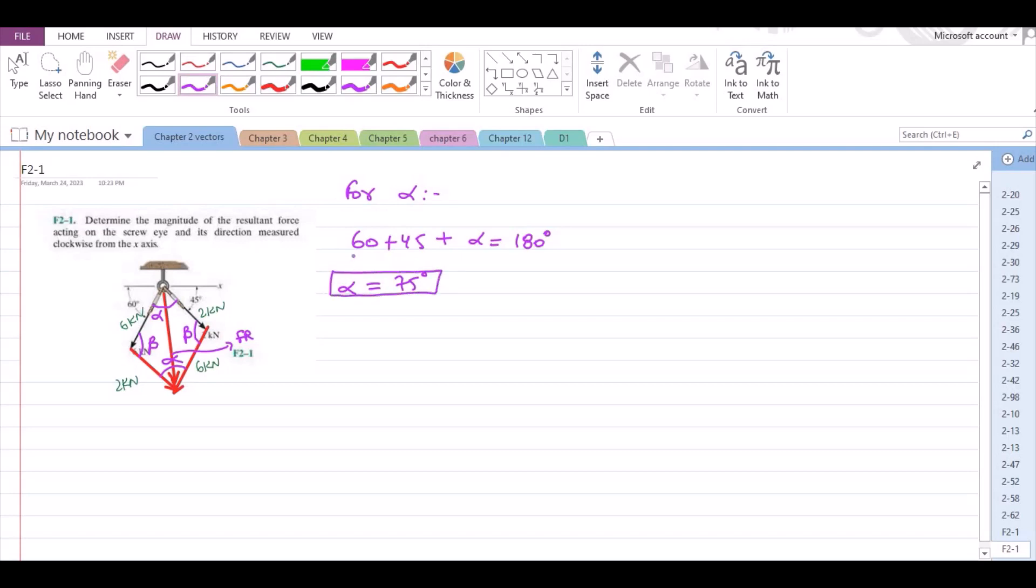Now, we know that for a quadrilateral, the sum of the interior angles is equal to 360 degrees. From here beta is equal to 360 degrees minus 2 times 75 degrees divided by 2. From here beta is equal to 105 degrees.